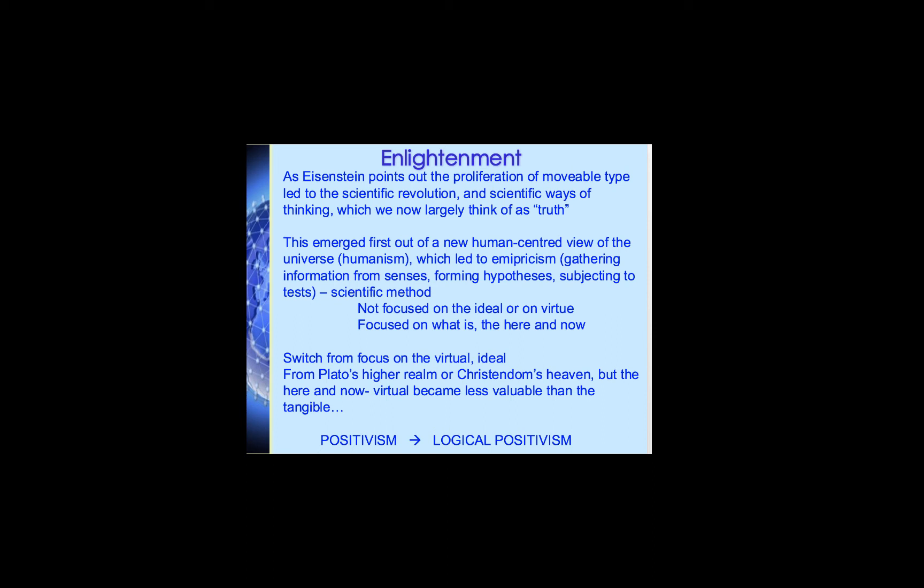I want to take a step back and show you that we've already visited theorists such as Elizabeth Eisenstein who are simply looking at technological changes that lead to different ways of thinking about the nature of reality. Eisenstein pointed out that the proliferation of movable type after Gutenberg's press led to a scientific revolution and scientific ways of thinking — which we now largely think of as truth. But she was actually saying this was just a shift in a way of thinking: now we have lots of movable bits to put into a printing press, and we begin to think about knowledge as broken into component bits we move around, question, and recombine.